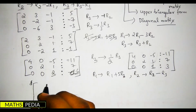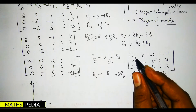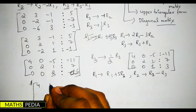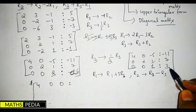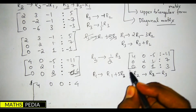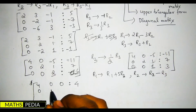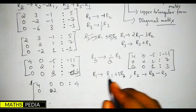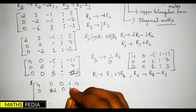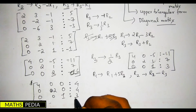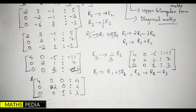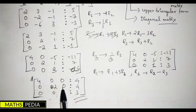After applying these transformations, R1 becomes [4, 0, 0 | 4] (since -11 + 15 = 4), R2 becomes [0, 2, 0 | 4] (since 7 − 3 = 4), and R3 remains [0, 0, 1 | 3]. This is our final diagonal matrix — all non-diagonal elements are zero.